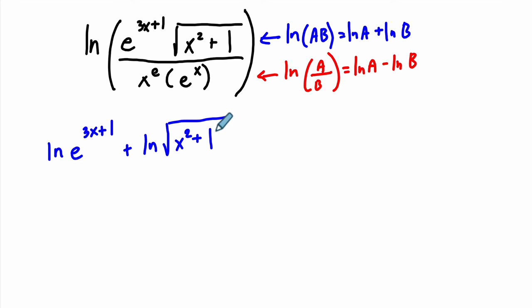And the idea is that I'm viewing a as this whole numerator right here and b as this whole denominator, so that we can rewrite this now by subtracting what's in the numerator by the natural log of x to the e and subtracting the natural log of e to the x.